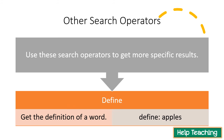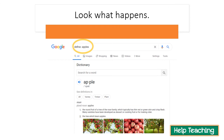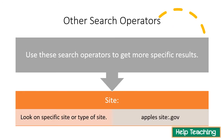Another search operator is define. This is a really quick way to get a definition of a word. Rather than typing in the word and hoping the definition comes up, or typing 'what is the definition of,' you can just type 'define:' followed by the word you want. So I typed 'define: apples' and right away I get the definition of apple — very simple.